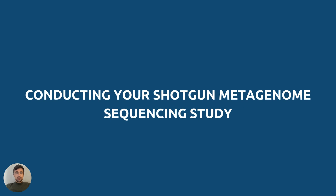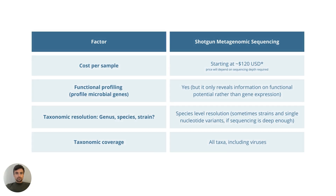As you can see, shotgun metagenomic sequencing is becoming an increasingly important tool in many industrial and research applications, and it may be suitable for you. However, there are a number of factors to consider when planning your metagenomic study. Proper cost planning, functional profiling, and minimizing contamination will directly impact the success of your results. The requirement for functional profiling or deep taxonomic profiling will also determine whether you conduct shotgun metagenomic sequencing or simpler, cheaper amplicon sequencing.